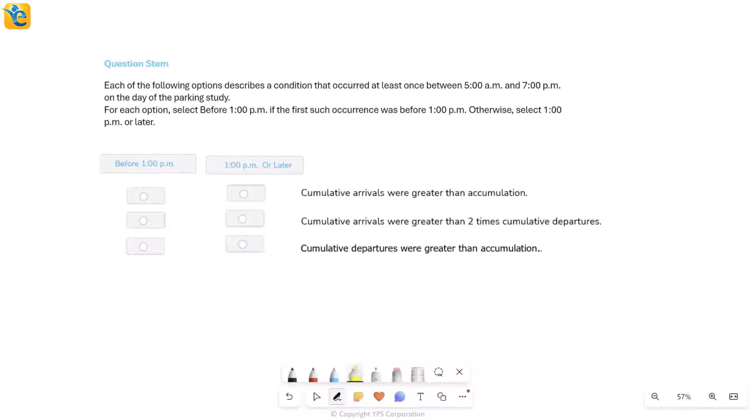Okay, let's read. It says each of the following options, all three of these here, describes a condition that occurred at least once between 5 am and 7 pm, which is the total duration we're seeing. So all of these conditions occurred at least once, one or more than once, on the day of the study. Now for each option, select before 1 pm, which is this option here, select before 1 pm if